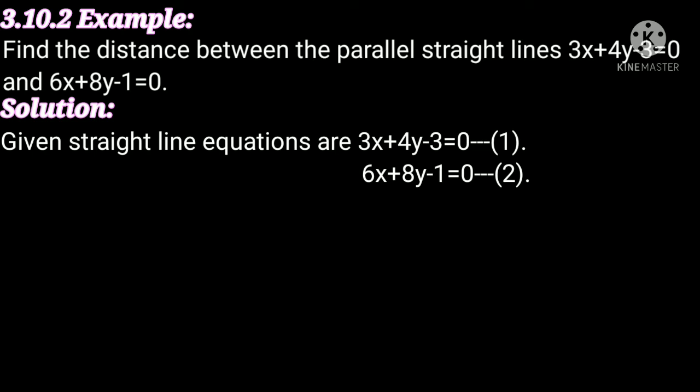The formula for the distance between two parallel lines is mod of (c1 minus c2) divided by square root of (a² plus b²). But for applying this formula, the given two equations must have the same x and y coefficient values.